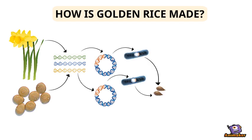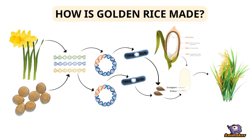Then these agrobacteria are placed on a petri dish containing rice embryos. While they infect the rice embryos, they also transfer the gene that encodes the instructions for making beta carotene.